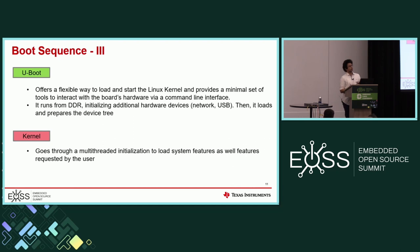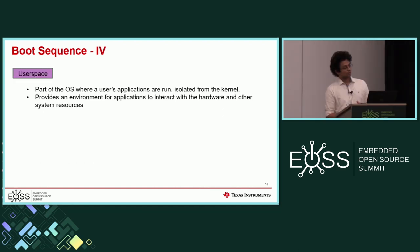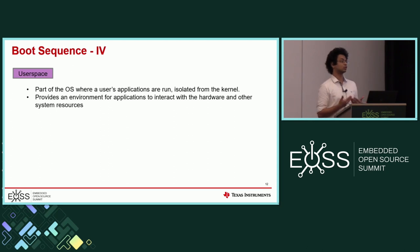From U-boot proper, you parse the device tree, you parse the kernel, and then finally load into your kernel, which goes through a multi-threaded initialization. We have four cores and we have to use all of them. It initializes all our drivers and the entire system. At the end of the kernel is your process ID 1, which actually starts your file system and lets you work on your user space applications.